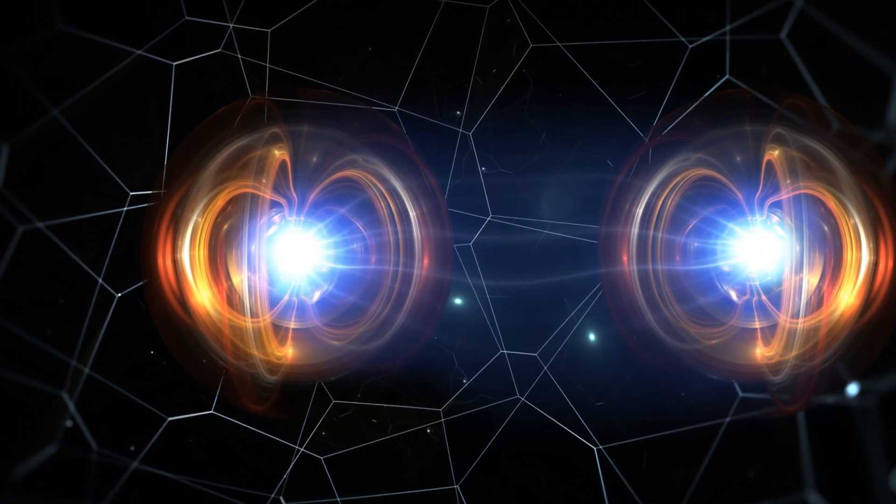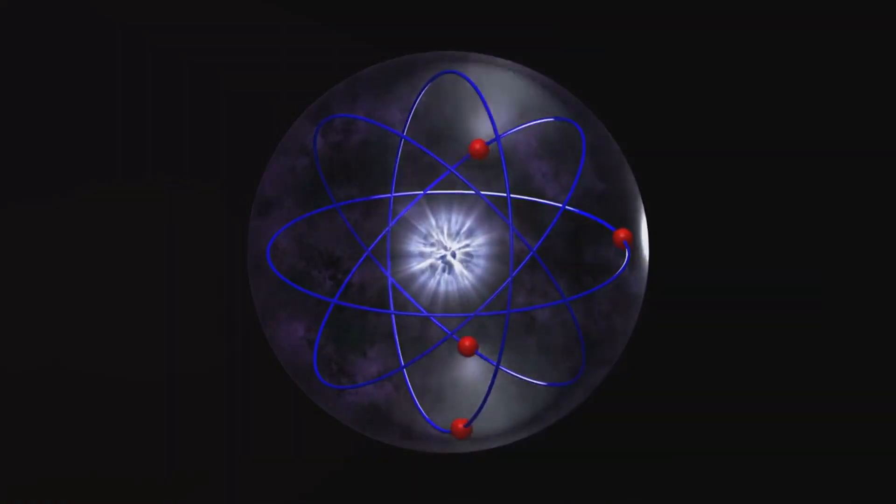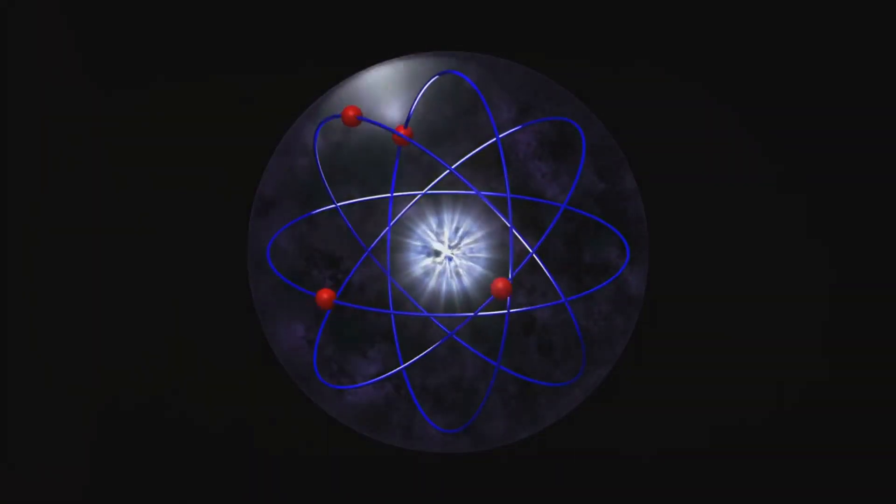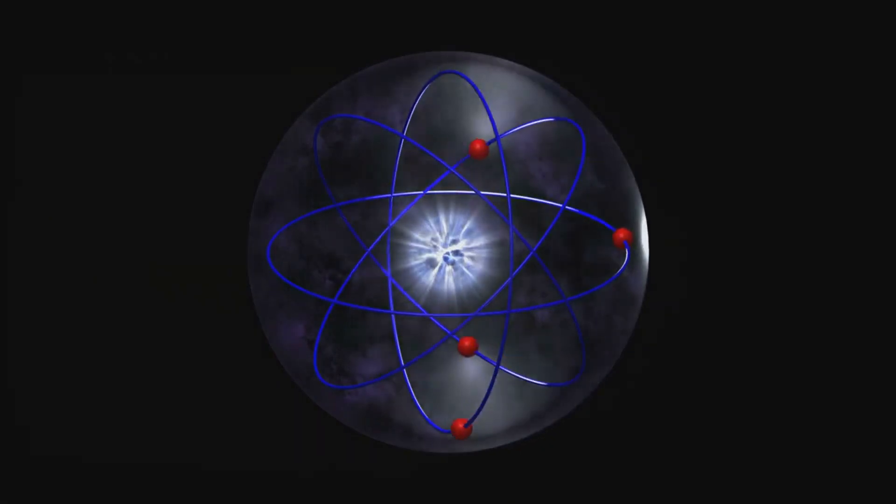These particles, with their half-integer spins, behave in ways that often defy our common sense, giving rise to a variety of matter states. This brings us to an intriguing state of matter known as the fermionic condensate.